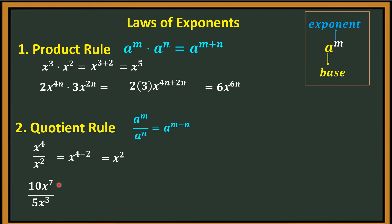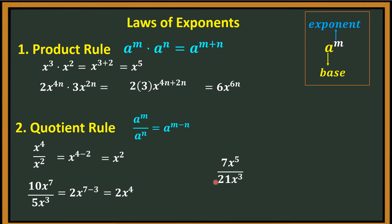Next example: 10x raised to the seventh power over 5x cubed. Same base is x. For 10 and 5, we divide them — 10 divided by 5 is 2. So that is 2x, then subtract the exponents: 7 minus 3 — so that is 2x raised to the fourth power. Another example: 7x to the fifth power over 21x cubed. We simplify 7 over 21, which is 1 over 3. Since x has the same base, you just copy, then subtract the exponents: 5 minus 3. So that is one-third x squared.